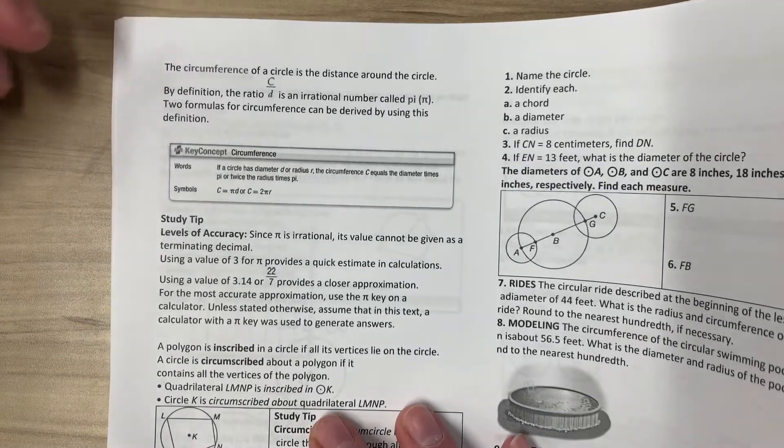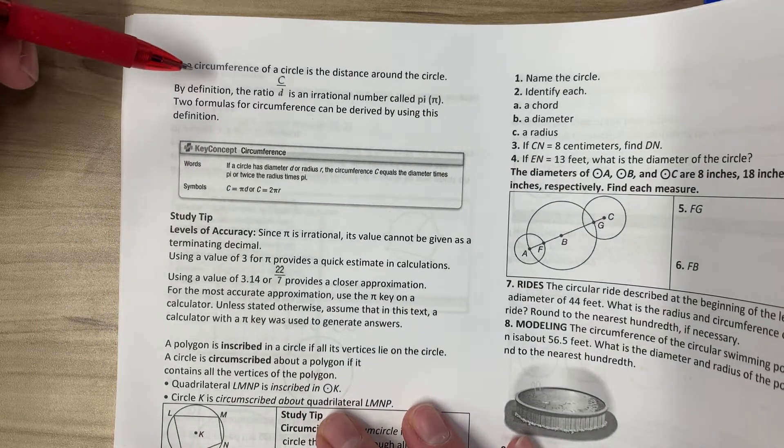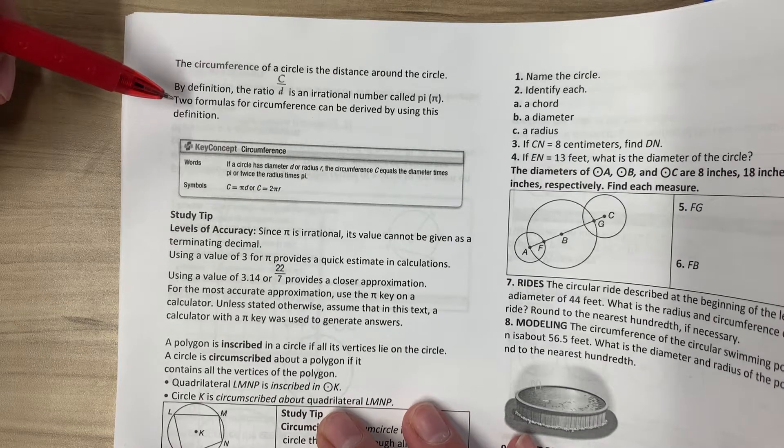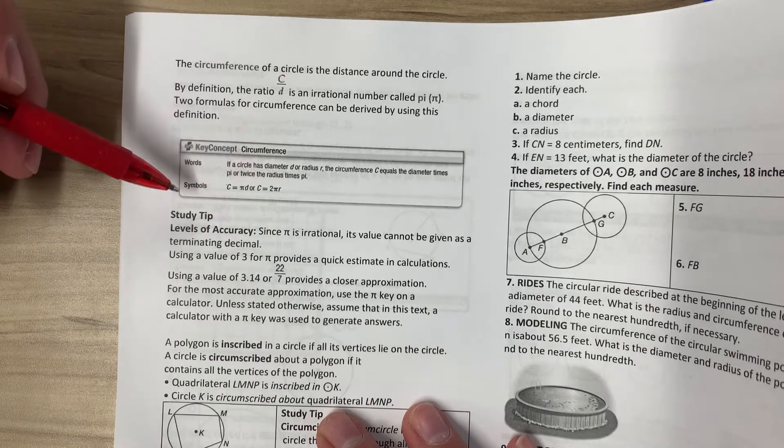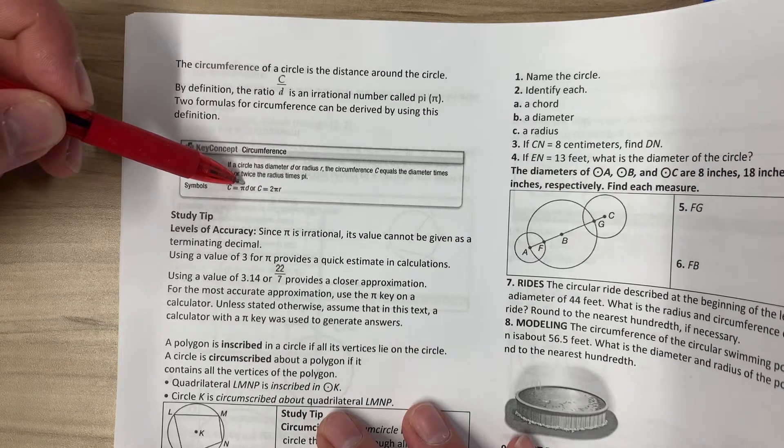The circumference of a circle is the distance around the circle. By definition, the ratio of C over D is an irrational number called pi. Two formulas for circumference can be derived by using this definition. C equals pi D, where D is the diameter. Or C equals 2 pi R, because 2 times R is the same thing as D.